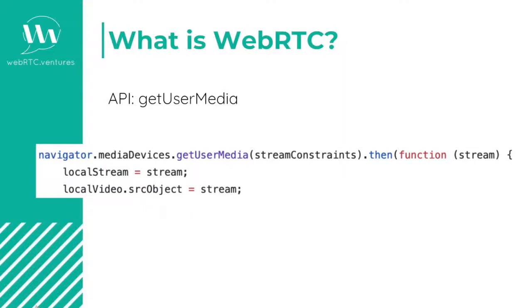The first one is Get User Media. Get User Media enables your application to access users' media devices. The user will see a prompt asking for permissions, and after granting them, the streams of such devices will be available to be used from the code. Here you see an example of how the Get User Media API is used in JavaScript code.